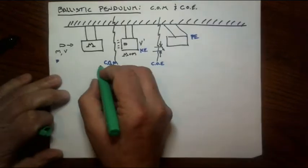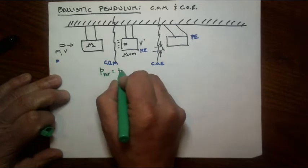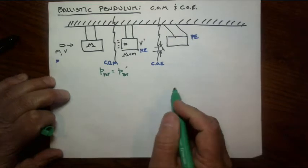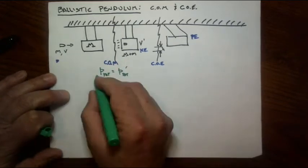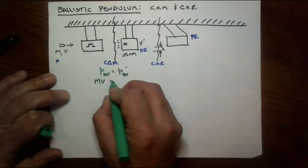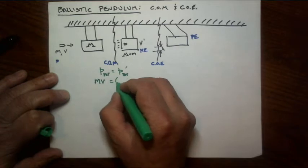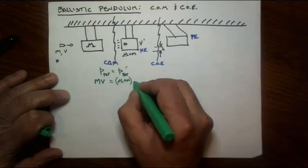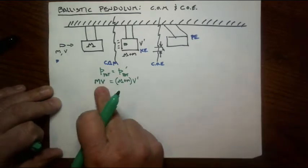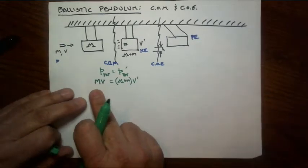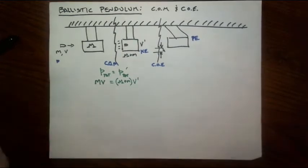Let's do the conservation of momentum part first. The momentum total beforehand equals the momentum total after the collision. Beforehand, the only object that has momentum is the bullet. And the bullet's momentum will be little m times little v. Afterwards, it's the big block with the bullet embedded in it that has momentum. So that will have a mass of m plus little m and a velocity of v prime. Now, remember, we're working backwards to try to figure out what the velocity of the bullet is. So I'm going to leave this as it is here, and we'll figure out what to do with it after we work on the conservation of energy.